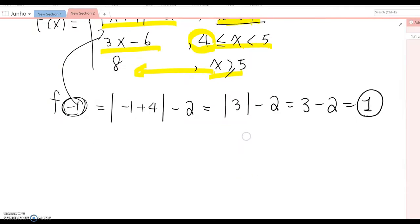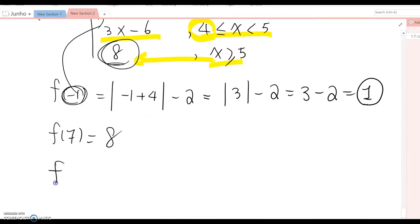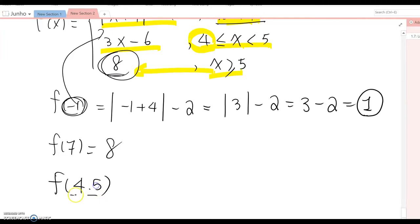Okay, now what about f(7)? f(7) means bigger than 5, so using this function. In this case there's no x that exists, which means no matter what x is, the answer is always 8, so it just becomes 8. What about f(4.5)?